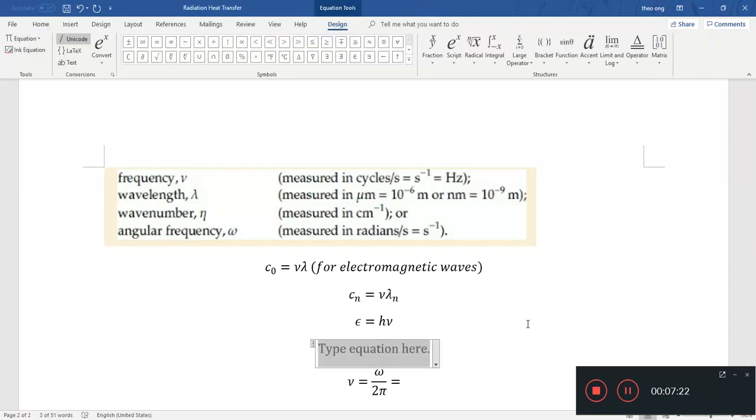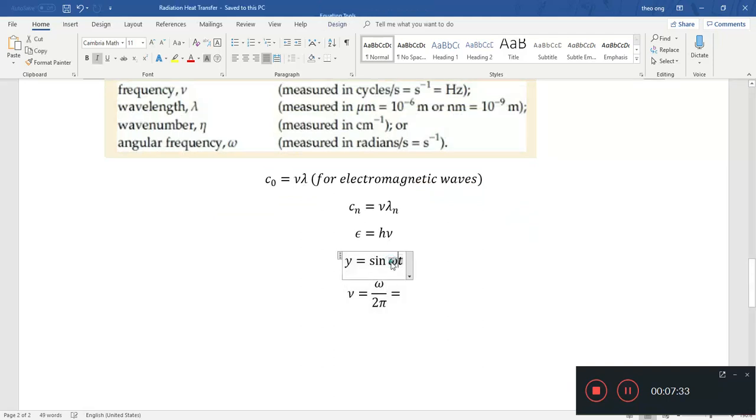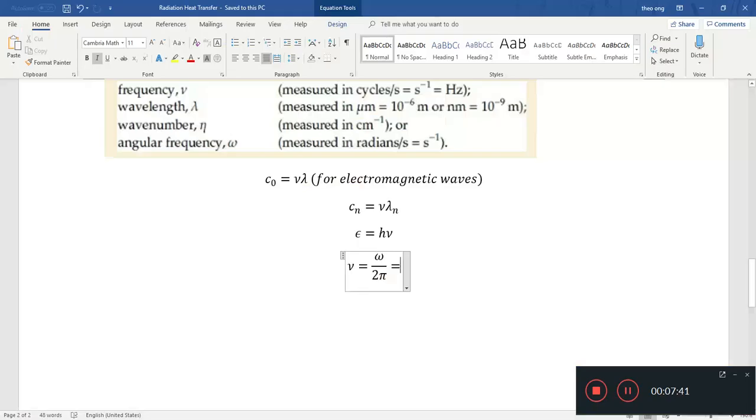Let's write that down: ν = ω/2π. And what is ω? ω is the angular frequency. If we studied simple harmonic motion, you will see some sort of equation like y = sin(ωt), where ω is the angular frequency.